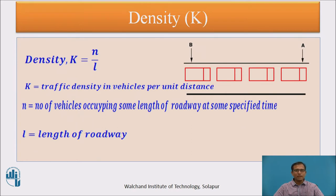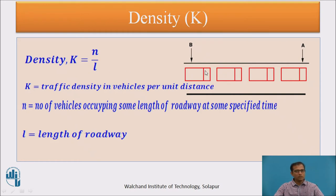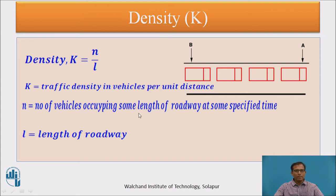Density is measured as the number of vehicles spaced in a length L. If vehicles 1, 2, 3, 4 are in a length L, then density K equals the number of vehicles N divided by length L, where L may be 1000 or 1500 meters. K is density in vehicles per unit distance, usually per kilometer; N is the number of vehicles in a specified length and time; and L is the length of roadway.